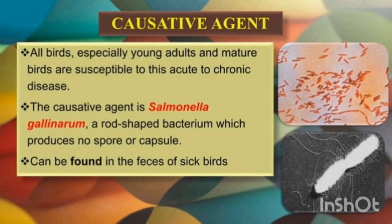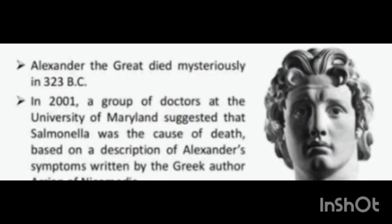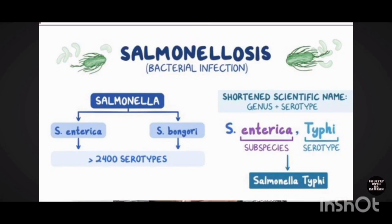The causative agent of this disease is Salmonella gallinarum, which is a rod-shaped bacteria having flagella that help them in their movement. This bacteria is historically considered very important. Salmonella comes in two forms: Salmonella enterica and Salmonella bongori. There are 2,400 serotypes of this bacteria. There are two serotypes of Salmonella enterica: Salmonella typhi, also known as Salmonella gallinarum, which causes fowl typhoid, and Salmonella pullorum, which causes pullorum disease.